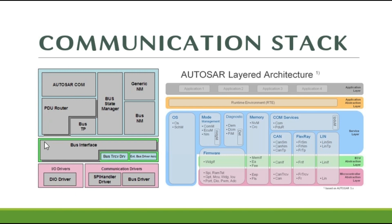Here you can see the AUTOSAR COM stack alone segregated from the BSW layer. We have AUTOSAR COM, PDUR router, and bus TP and bus interface. Likewise we have the MCAL layer with CAN drivers and IO drivers. In this video we are going to talk about CAN IF and CAN TP related to the CAN protocol. AUTOSAR COM and PDU router and bus TP (which means CAN TP) and CAN IF are for data transmission and reception. This section is for state management, and bus NM is for network management.